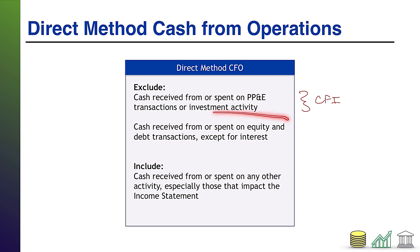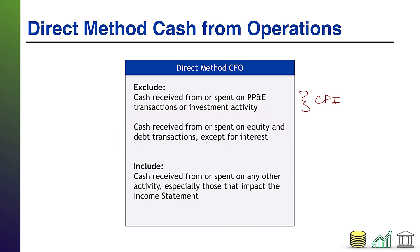You'll also want to exclude cash received from or spent on equity and debt transactions — your own equity, your own debt: your stock, your bonds, except for interest. These are your CFF activities, cash flows from financing activities. Now you might be saying, no kidding — of course we're not going to put CFI and CFF in the CFO section. But the reason I'm telling you this way is because in US GAAP, the actual regulation defines operating cash flows as any cash flows that are not CFI or CFF. So it's a definition by exclusion, and therefore anything else goes in your CFO section.